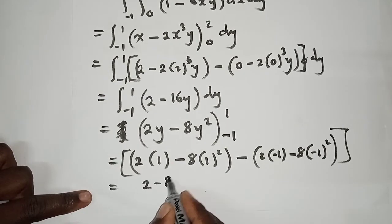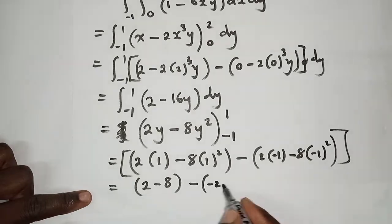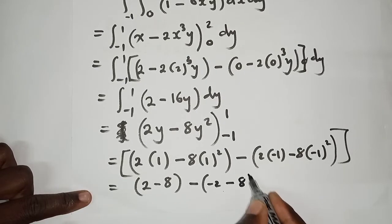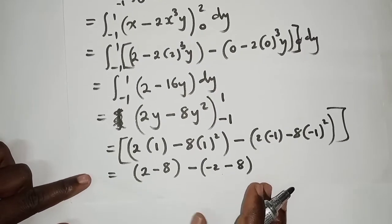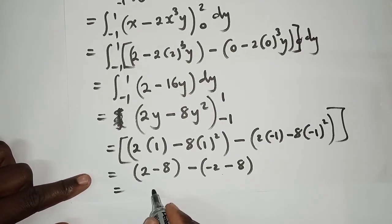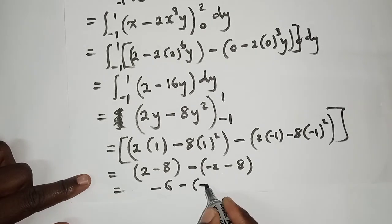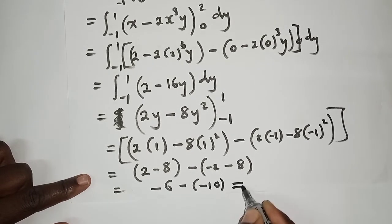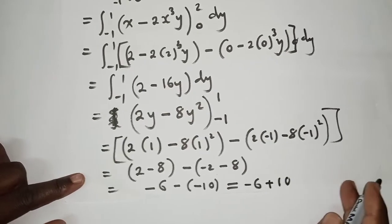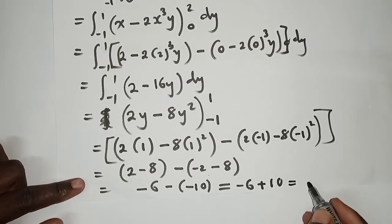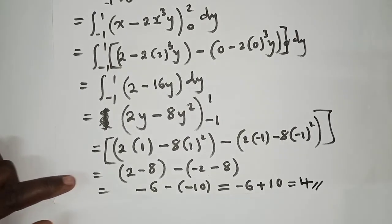So here we can work out. We have 2 minus 8, minus here we have negative 2 minus 8 also, because this negative 1 will just be positive. Thereafter we get negative 6 here minus inside the brackets here we get negative 10. So here it will be negative 6 plus 10, and when we say negative 6 plus 10 it will just be 4. Our answer will be 4.